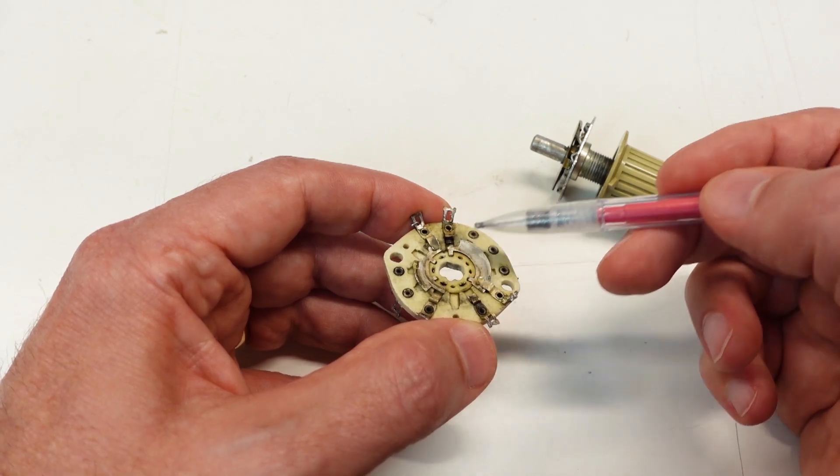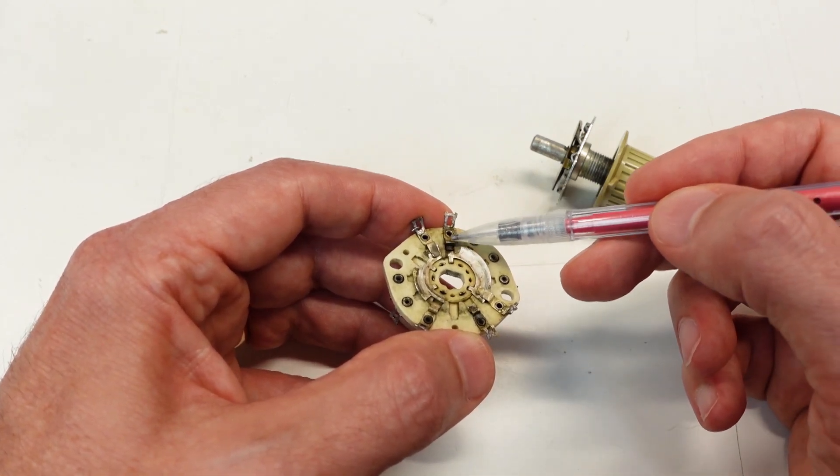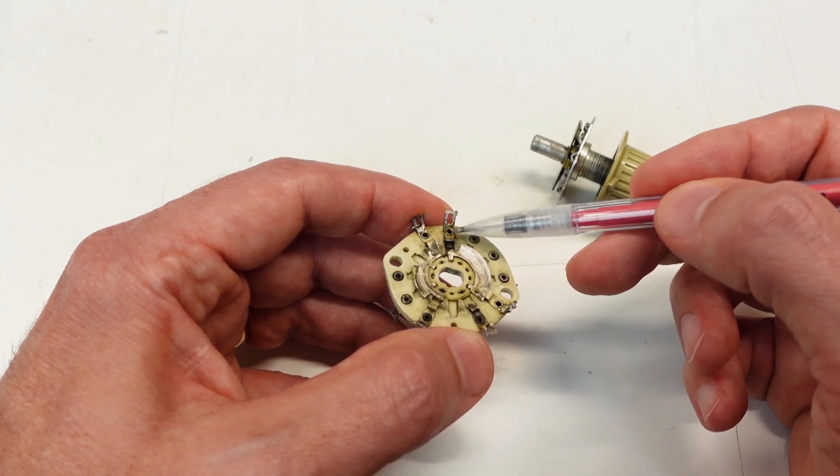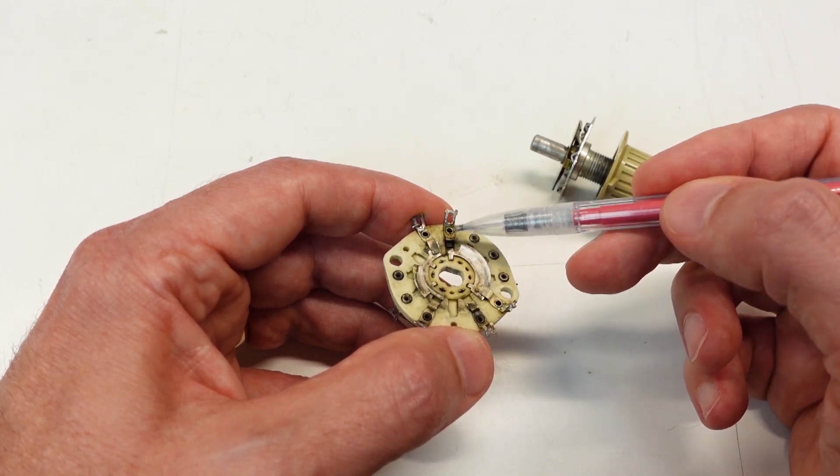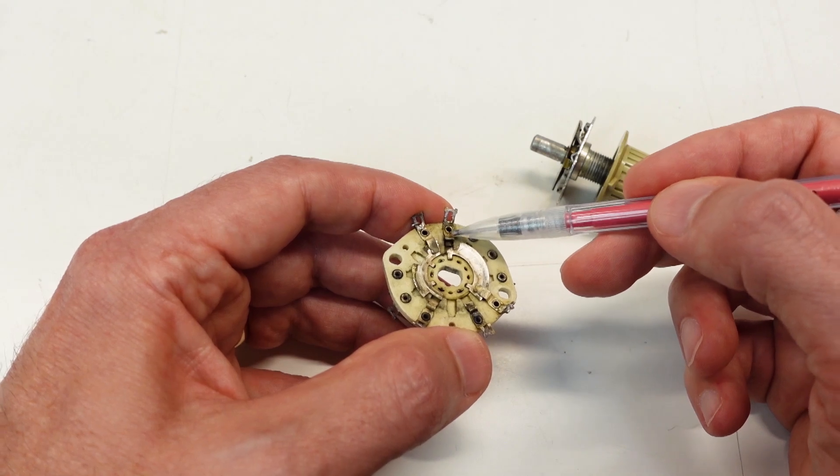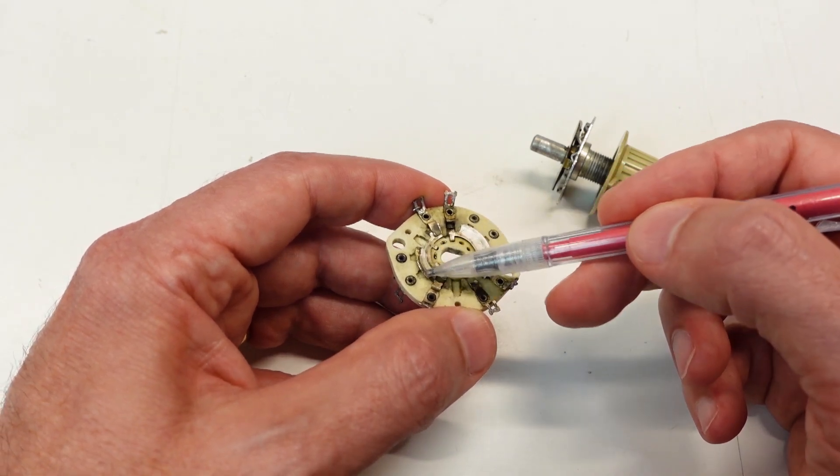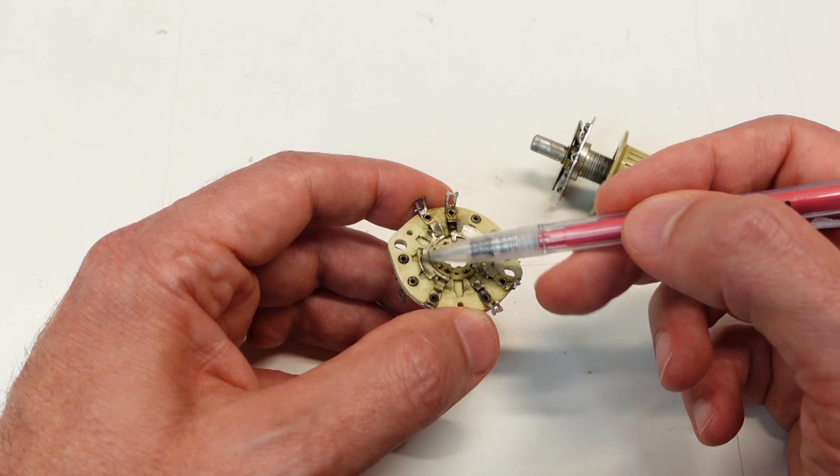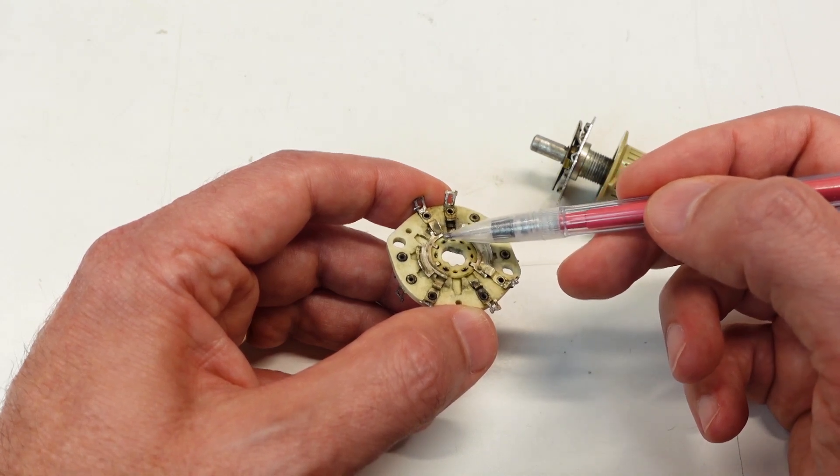Now, I've seen online where some folks have been somewhat successful at taking off bad contacts and putting on a salvaged one from another switch and just use a small enough screw and nut to hold it on. I could do that here, but I still would have this problem over here with all this erosion. So that's not going to fix the problem.